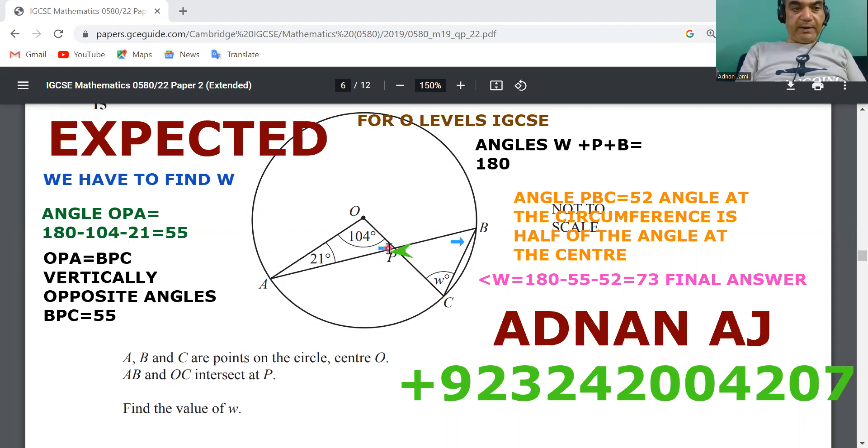That is basically angle OPA. That angle is part of the triangle OPA as well, so angle OPA will be equal to the sum of the triangle is 180, so 180 minus 104, which is the given angle over here, and minus 21, which is the given angle here. We get 55.